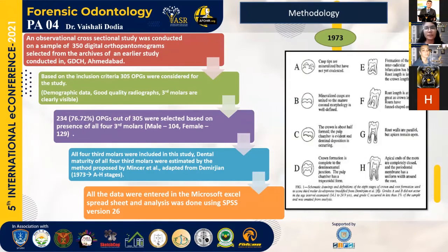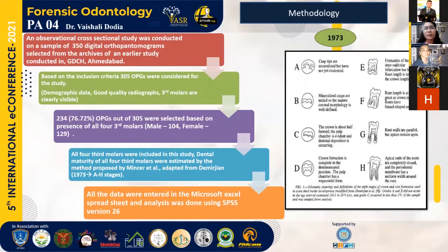In Stage A, cusp tips are mineralized but not fused. In Stage B, there is mineralization of cusps and fusion of cusp tips. In Stage C, the pulp chamber is evident. In Stage D, crown formation is complete to the dentinoenamel junction. In Stage E, inter-radicular bifurcation is seen. In Stage F, root length is at least greater than crown length. In Stage G, root poles are parallel but apices are not closed. In Stage H, the apices are closed. All ratings were transferred to Microsoft Excel and analyzed using SPSS software.